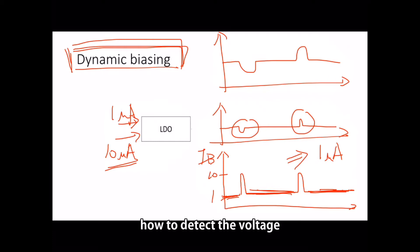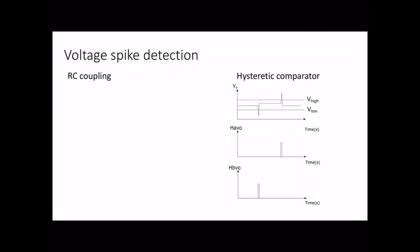But the problem is how to detect the voltage and inject the current at overshoot and undershoot. To detect the voltage spike, the most common way is RC coupling. RC coupling actually is just a high-pass filter.